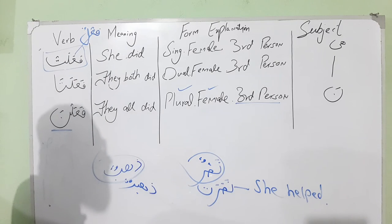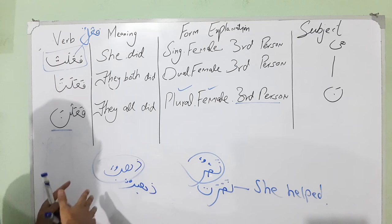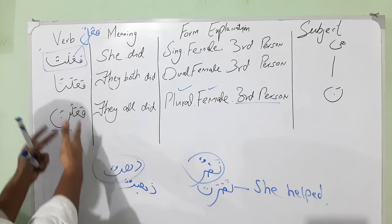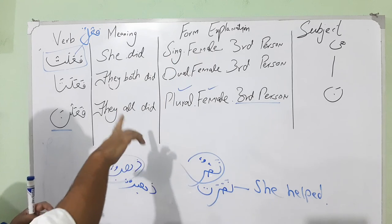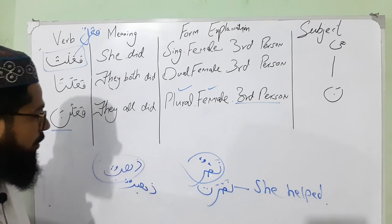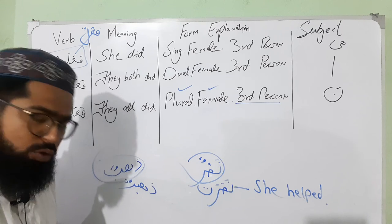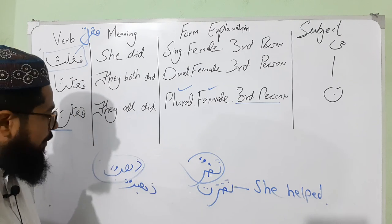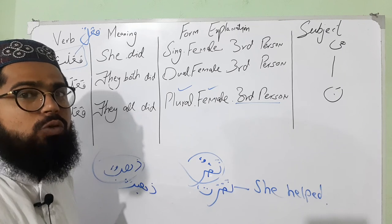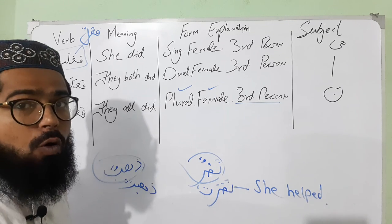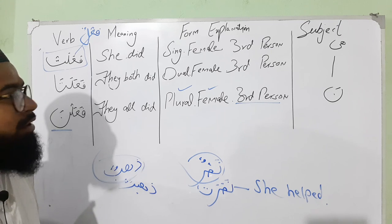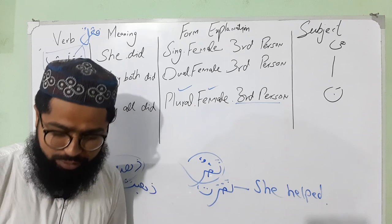So whatever the word is — if it follows the form of faalat, faalata, or faalna — this is the criteria in the Arabic language. Whichever word you form keeping this pattern in mind, the form explanation and tense meaning will be the same. The only difference is in the root word meaning. So far it's enough for today's lesson; in the next class we will discuss three more words. Assalamu alaikum.